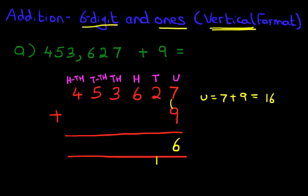So 1 and 6, 16. Now we're going to add the tens. 2 plus 0 plus the 1 over here. The answer is 3.